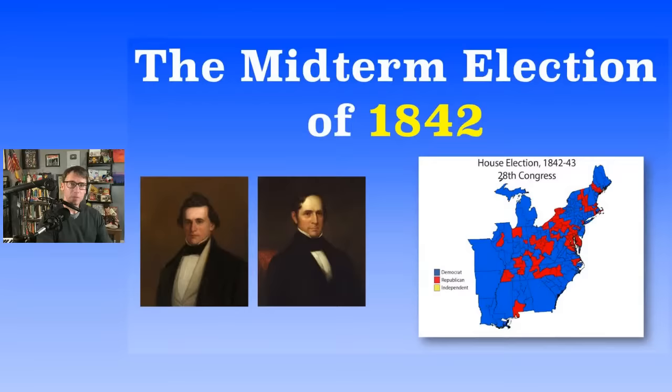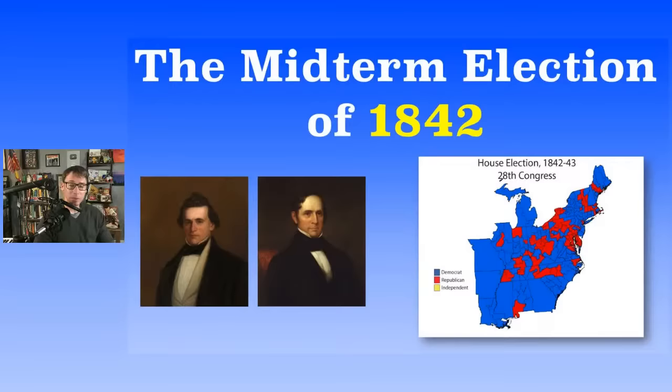In the House of Representatives in 1842, the Democrats picked up seats — actually, it was a landslide. They picked up 49 seats. There were 223 seats total; 112 were needed for a majority. The Democrats had just 98 before 1842; after 1842, they had 147. Quite a turnaround for the Democrats. The Whigs only had 72 afterwards.